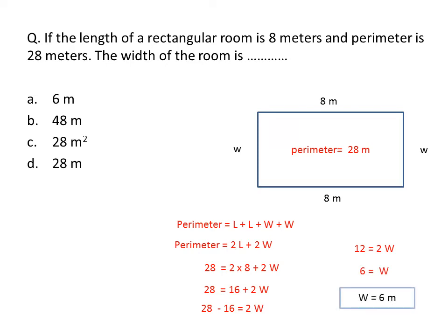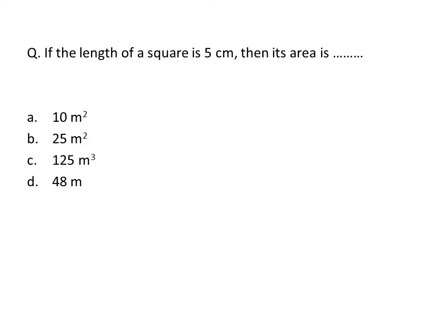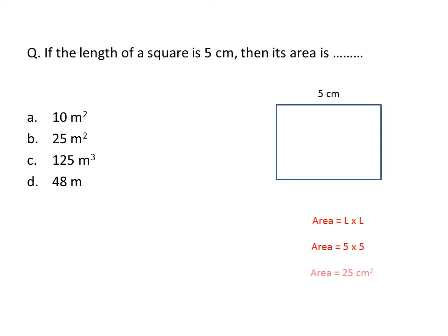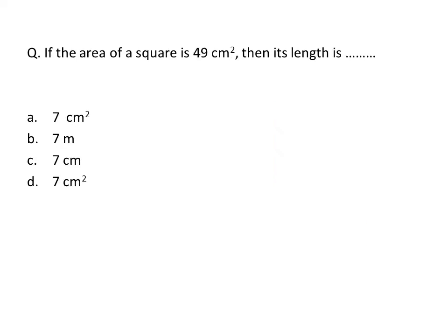Next question: if the length of a square is 5 centimeters, then its area is? A square has all four sides equal and all angles are 90 degrees. The area formula for a square is length × length, or length squared. Substituting length = 5: 5 × 5 = 25. So the area is 25 square centimeters. Option B is correct.